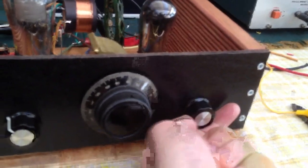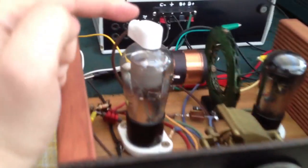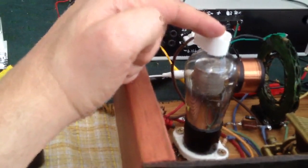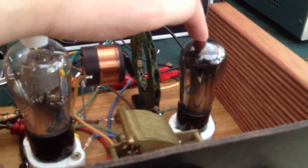It's got two valves in it: a type 32 tetrode, which is used as the regenerative detector, and a type 30 triode, which is used as the output.